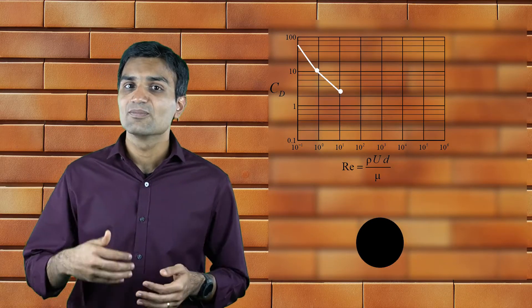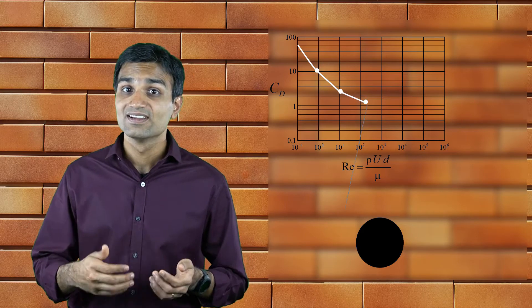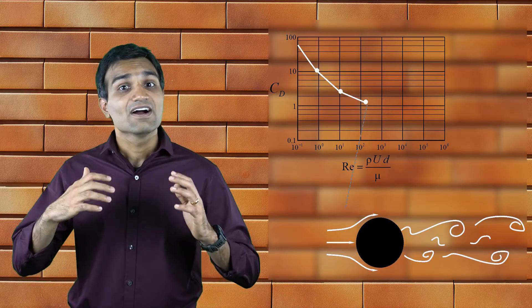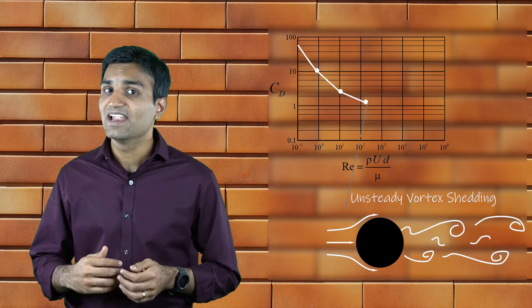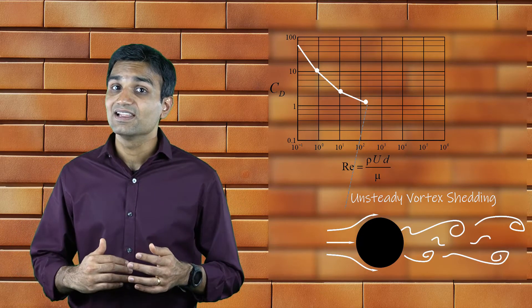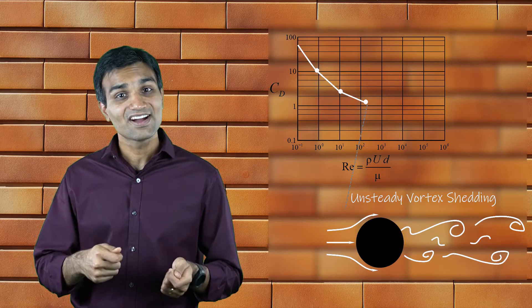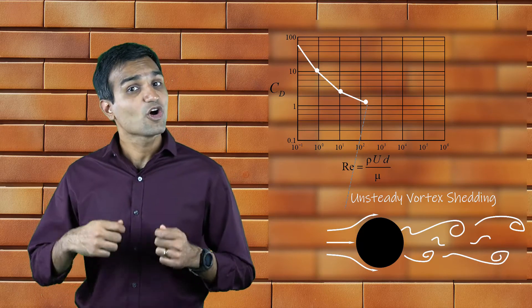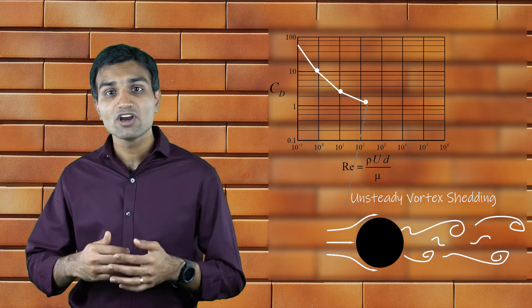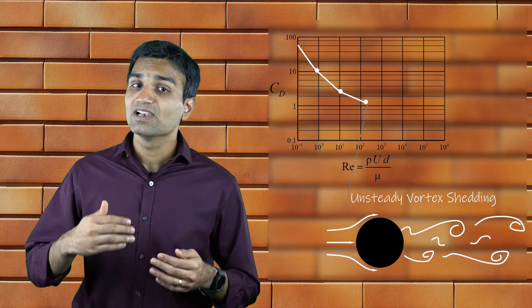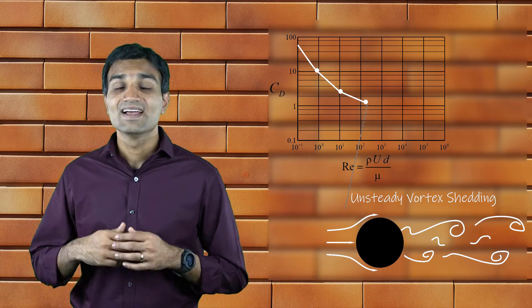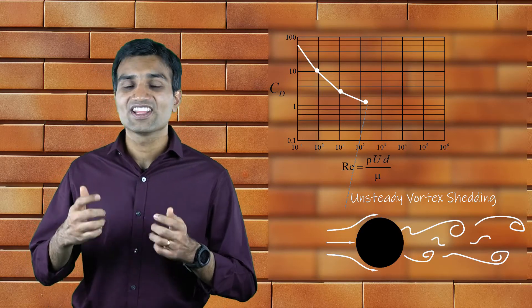As Reynolds number increases further, around 100, the flow breaks away from the top and bottom ends of the cylinder alternatingly to form an unsteady wake. In fact, the wake consists of pairs of alternating vortices that are stable in time. This is called Karman Vortex Street.